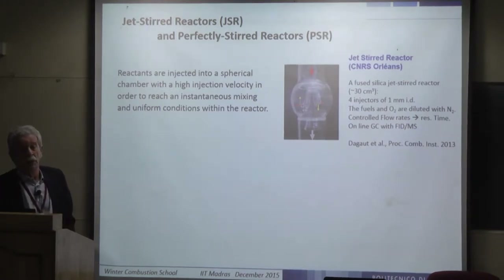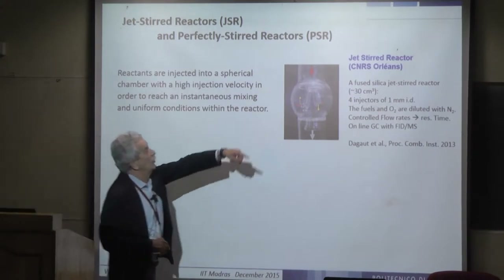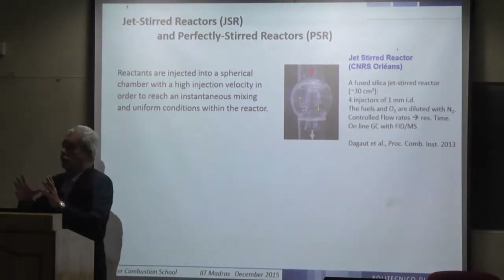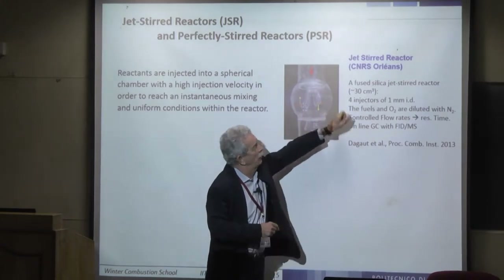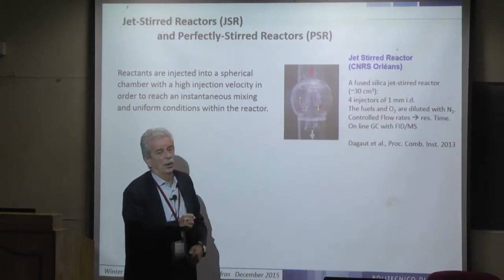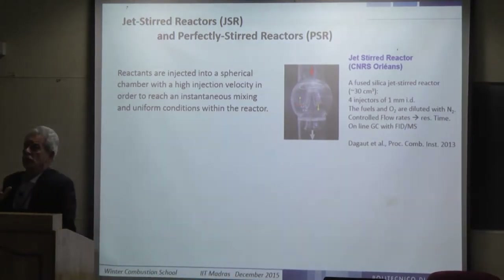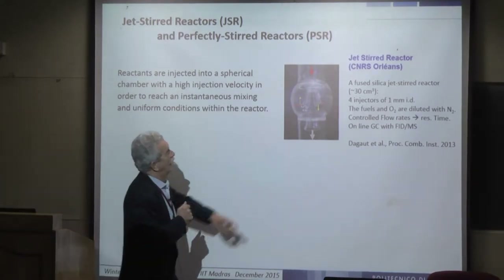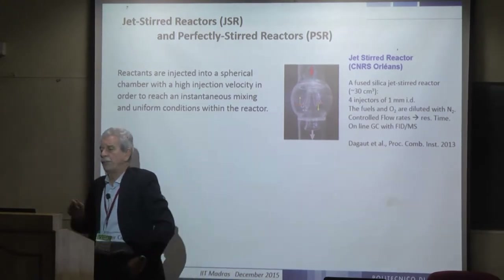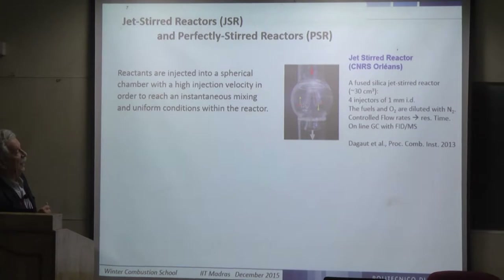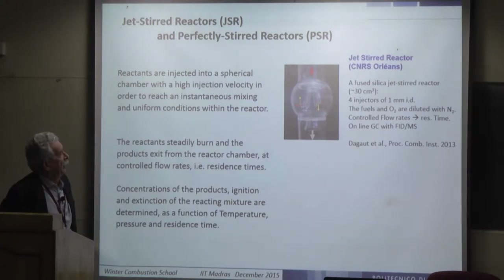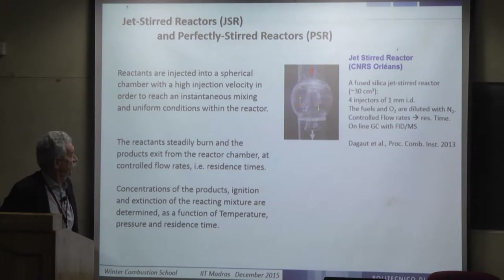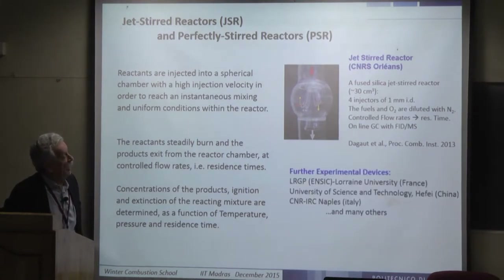The jet stirred reactor is a very ideal reactor where all the volume is assumed to have the same concentration and temperature. The reactor is small, about 30 cubic centimeters. The jet stirred reactor in Orléans — where Dagaut produced a large amount of experimental data — has four injectors to promote good mixing. Several jet stirred reactors exist worldwide, allowing analysis of fuel conversion over a range of pressures, temperatures, and stoichiometries.